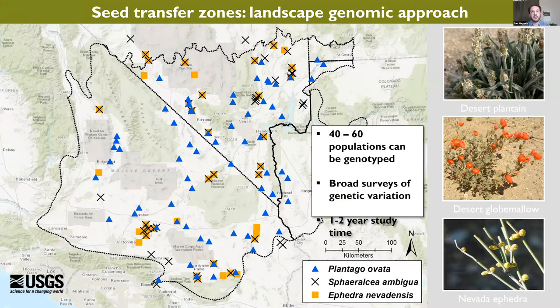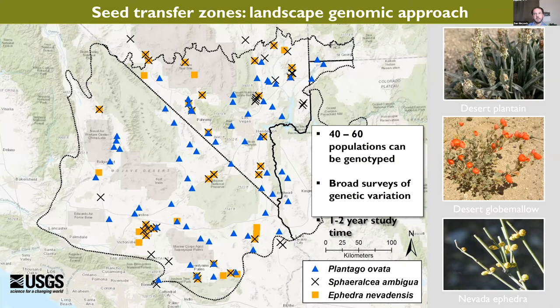Through the Mojave Desert Native Plant Program, we've genotyped three native Mojave Desert plants considered priority species for seed zone development. Our aim is to genotype 40 to 60 populations per species — something only possible over the last five to ten years. In terms of time, we can go from sequencing to seed transfer zones in one to two years, which is faster than a typical common garden experiment growing shrubs over a longer period.